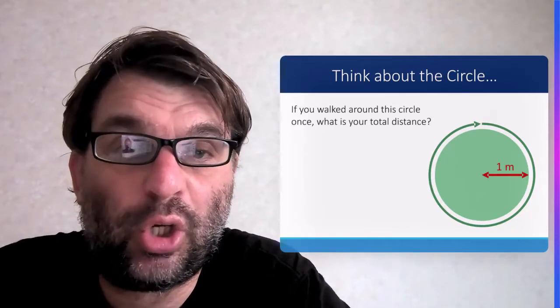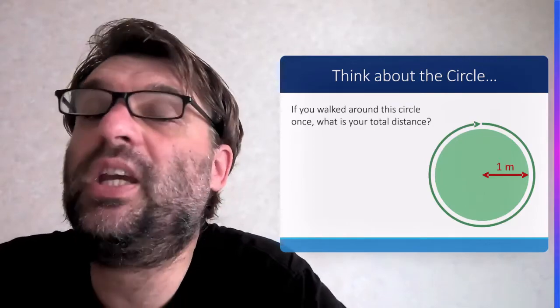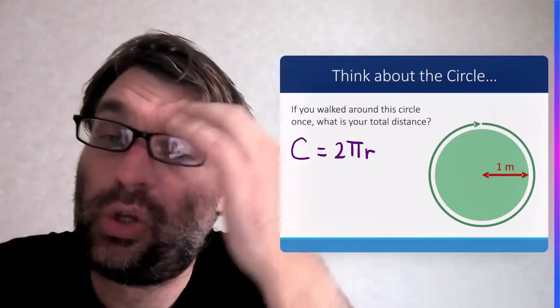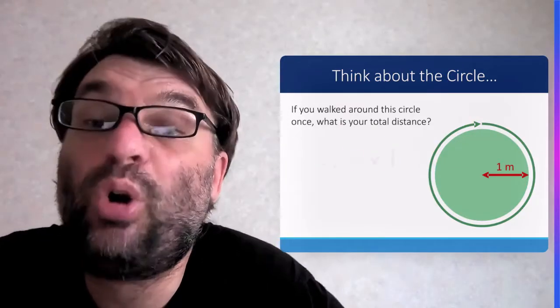So if you walked around this circle once, what would be the total distance? Well, it would be the circumference, 2πr, so 2π times 1, or 6.28 meters approximately.